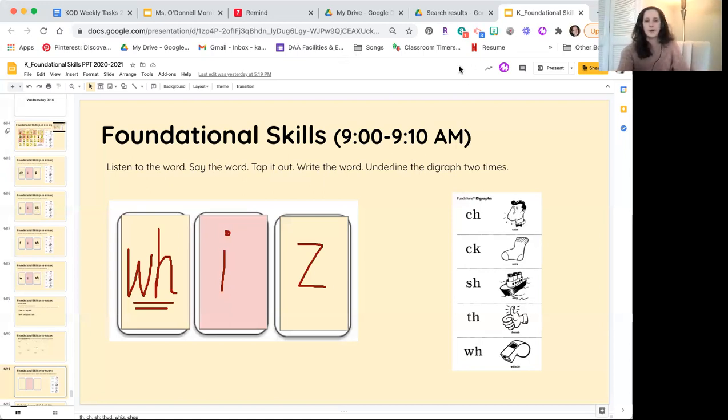Alright, we've got one more word to go. The last word is chop, like chop the veggies. Say the word. Tap it out. Chop, chop. Now write down the sounds you hear in the word chop.